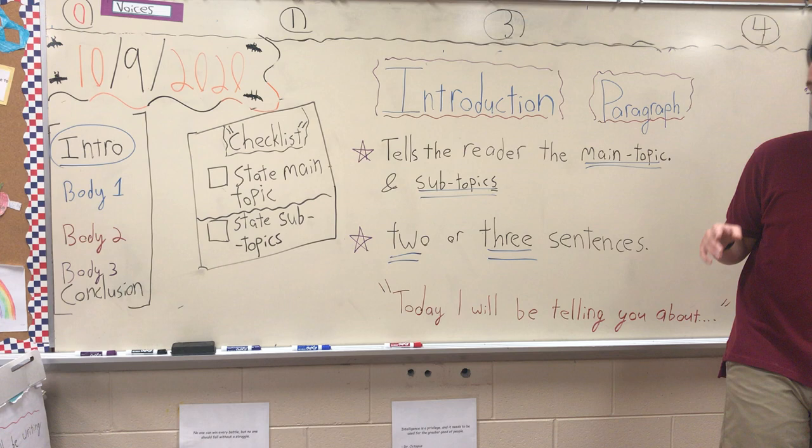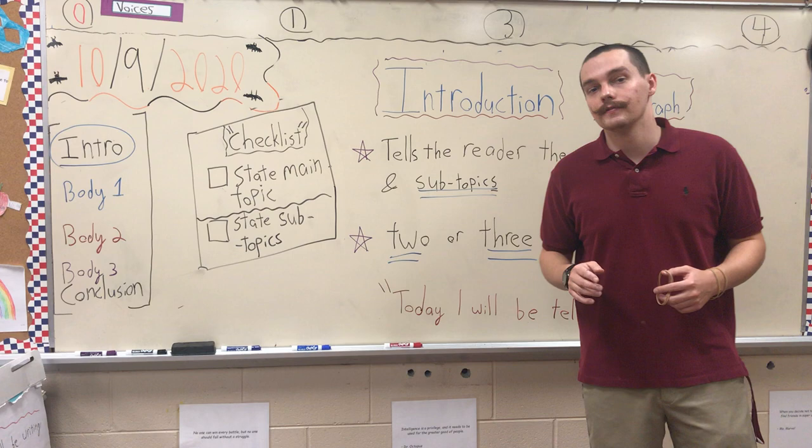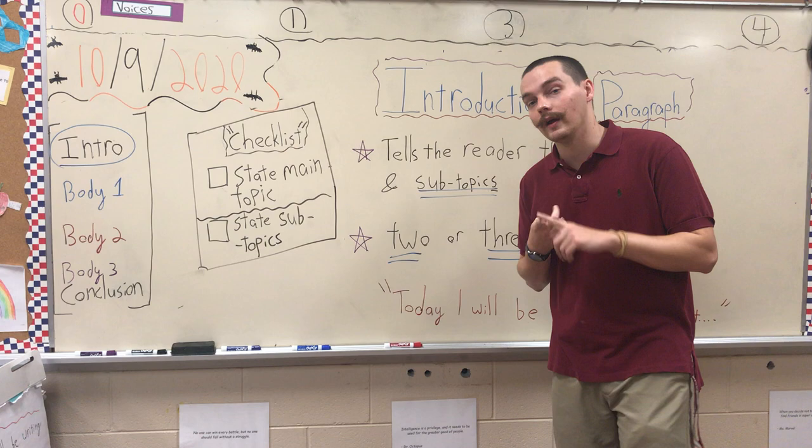So in my essay for the great white shark, my subtopics are talking about its diet — so what it eats — its body length, so the weight, length of its body, height, all that, and then also where in the world they live. So those would be my three subtopics. Main topic: great white shark. Your subtopics, for me at least: weight, length, diet, and then of course where in the world they live.